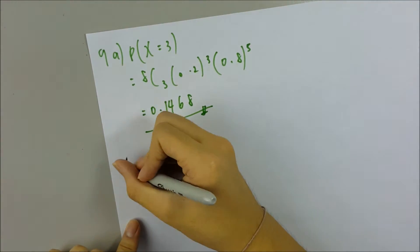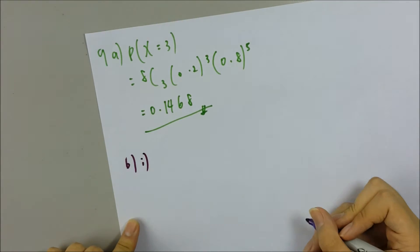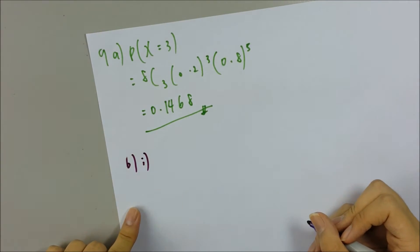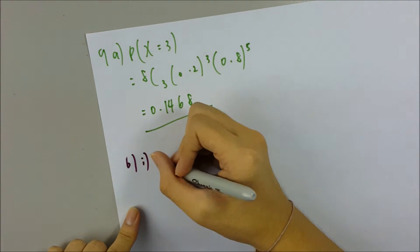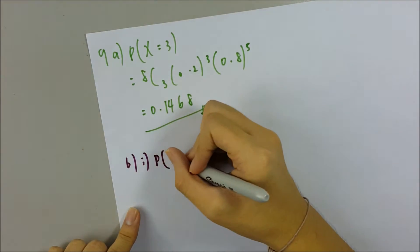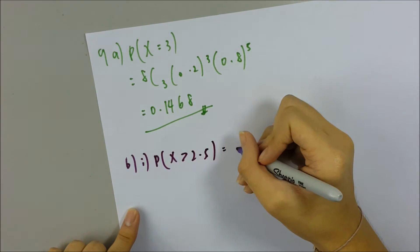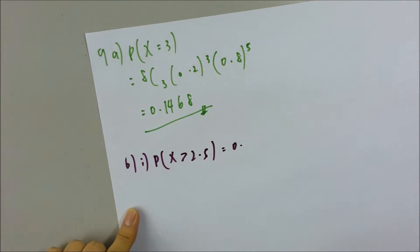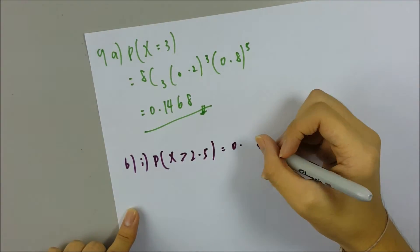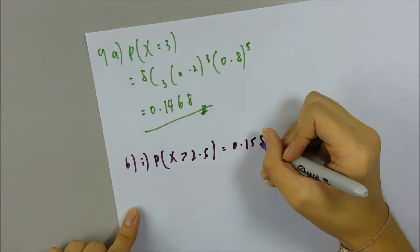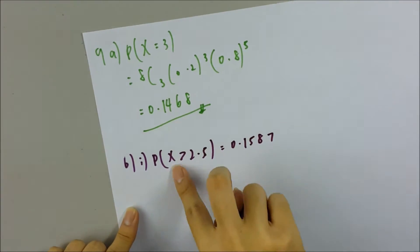It's given that P(X > 2.5), the probability that X is more than 2.5, is 0.1587. And you want to change the X score to the Z score.